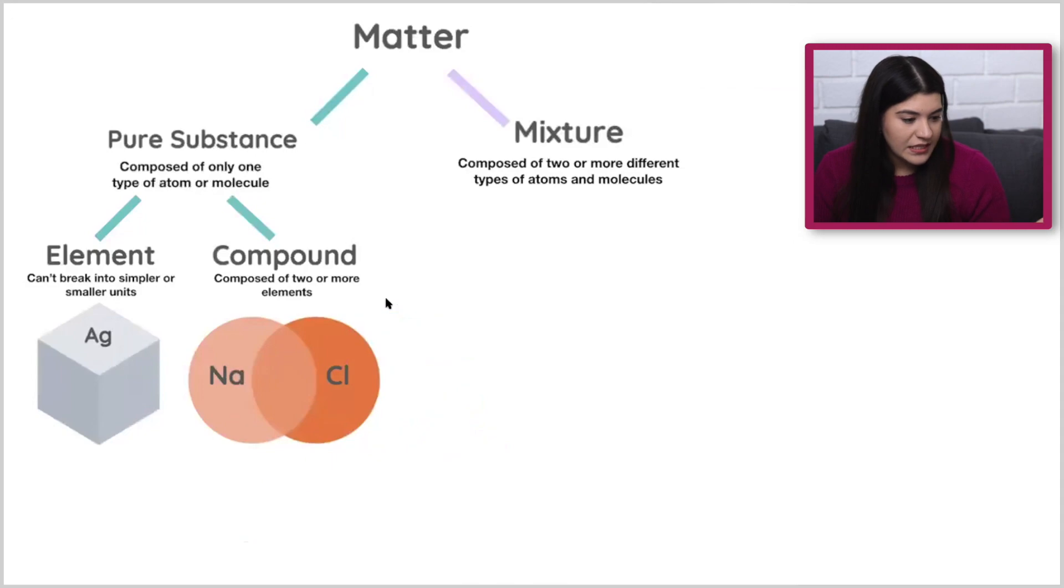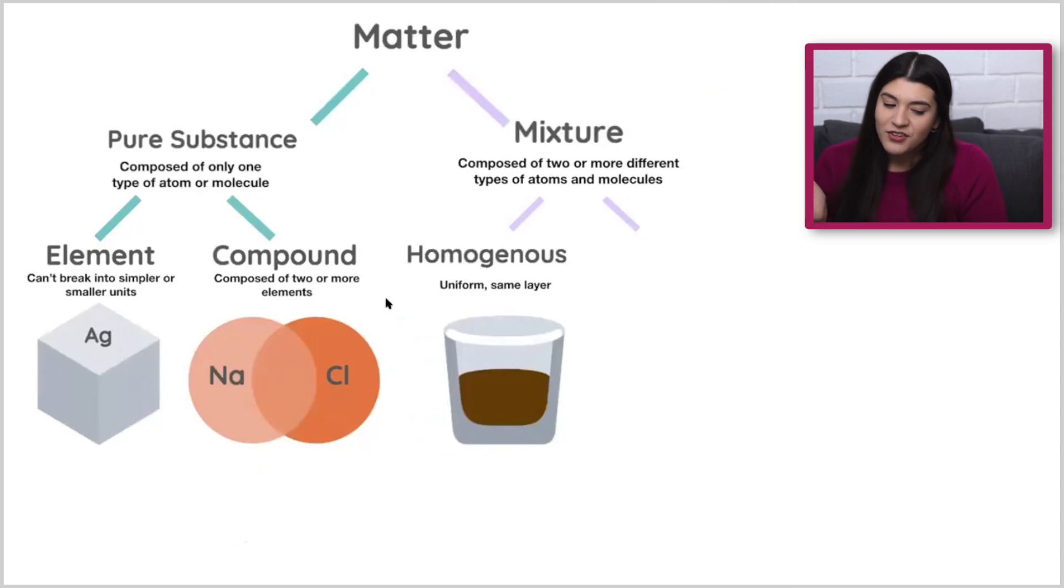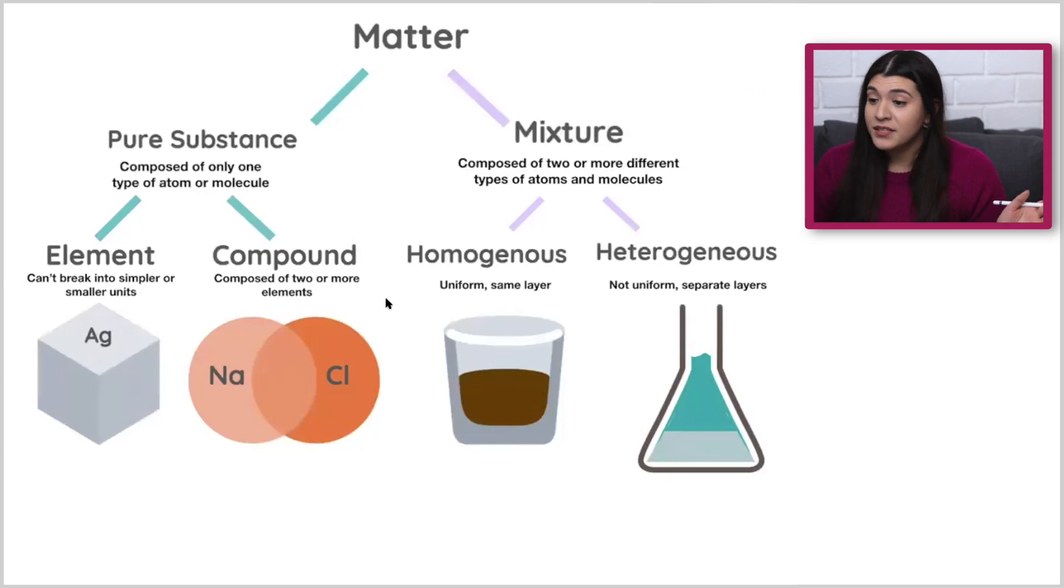Next we're going to see different types of mixtures. Our first type is going to be homogeneous, where everything is basically the same, it's uniform, so you're only going to be able to see the same exact layer. You're not going to see two different types of layers or two different distinct things. So in this case, I want you to think of just coffee. Just black coffee is going to be a homogeneous mixture since we're mixing water and those coffee grounds. Versus something that's heterogeneous, where it's not going to be uniform and we're going to see two distinct layers or multiple layers. You're actually going to see two different layers.